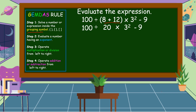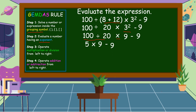Next, we're going to evaluate the number having an exponent: 3 squared. Bring down first: 100 divided by 20 times 3 times 3 is equal to 9, minus 9. Next, we're going to operate multiplication or division. In our remaining expression, division comes first before multiplication. So let's divide — 100 divided by 20 is equal to 5 — then bring down times 9 minus 9.